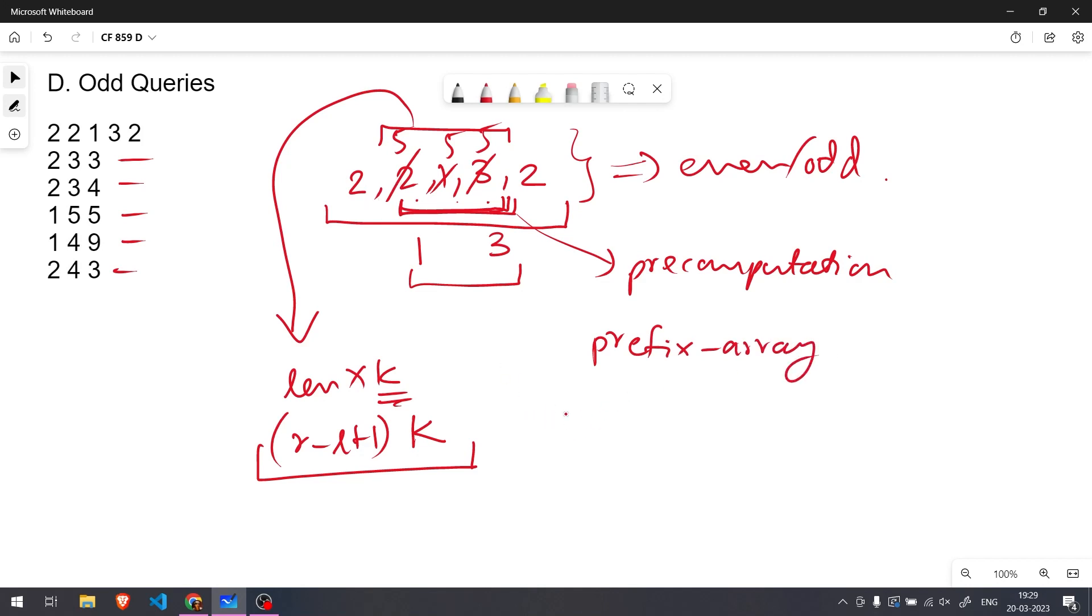And store the sum of each element. So for 2, 2, 1, 3 and 2, the sum of the elements would be 2, 4, 5, 8 and 10. And how do we get the sum of this range?